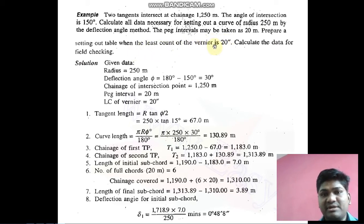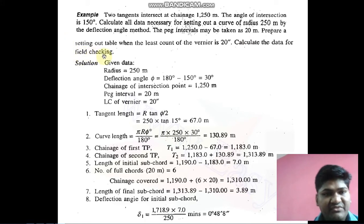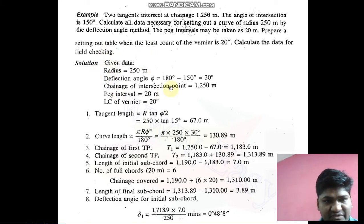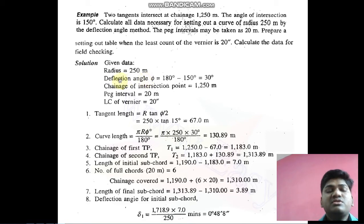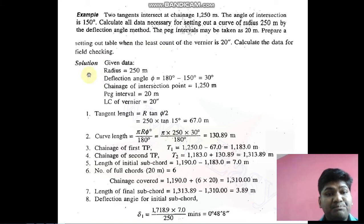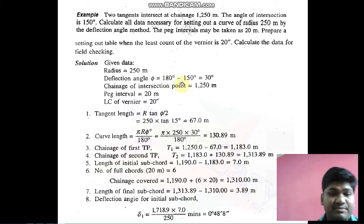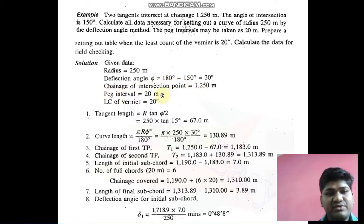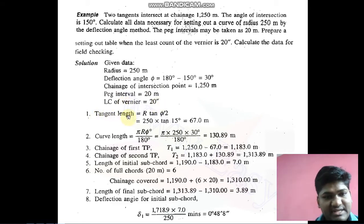Prepare a setting out table. The least count of the vernier is 20 seconds — this is very important for preparing the table. Calculate all necessary data for field checking. So first step is given data: radius, deflection angle. In this numerical they have given the deflection angle, not the interior angle, so we calculate the deflection angle by subtracting from 180. Chainage of intersection point is 1250 meters, peg interval 20 meters, least count 20 seconds.